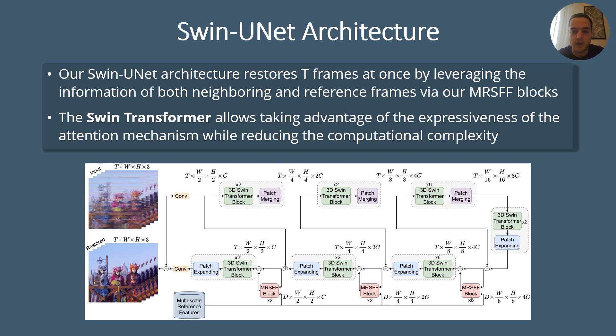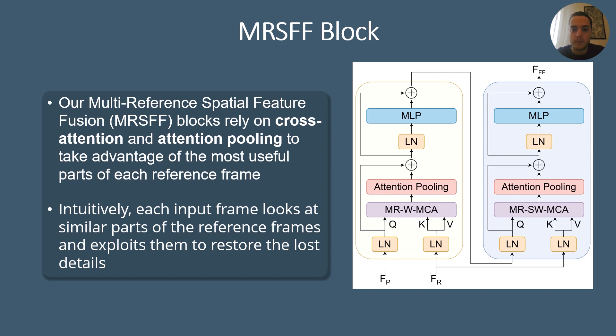Our network restores T frames at once by taking advantage of the information of both neighboring and reference frames, thanks to our MRSFF blocks. Our architecture is based on the Swin Transformer, which allows exploiting the expressiveness of the attention mechanism while reducing the computational complexity. The multi-reference spatial feature fusion blocks are inspired by the Swin Transformer blocks and employ cross-attention and attention pooling to leverage the most useful parts of each reference frame. Intuitively, each input frame looks at similar parts of the reference frames and uses them to restore the details that are lost due to the artifacts.